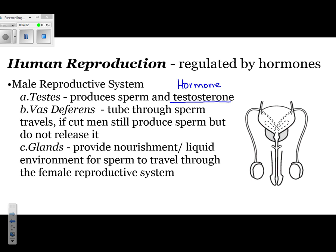There are two testes, both responsible for making sperm. The next part is the vas deferens — tubes on either side that connect to the testes. Their function is to serve as a transport system from the testes to the urethra. When these tubes are cut, that's called a vasectomy. People who have a vasectomy still make sperm; the sperm is just not released from the body.